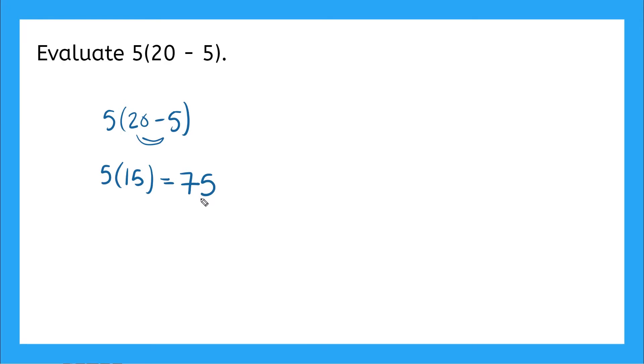But we know another way of solving this type of problem. We can use the distributive property. So I'm going to rewrite my expression over here. I have 5(20 - 5). And when I use the distributive property, what do I do? Yeah. I take what's outside the parentheses and I distribute it to everything inside the parentheses. So I will have 5 times 20 minus 5 times 5.